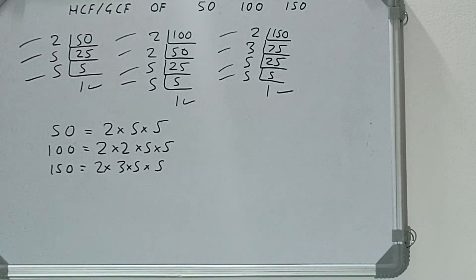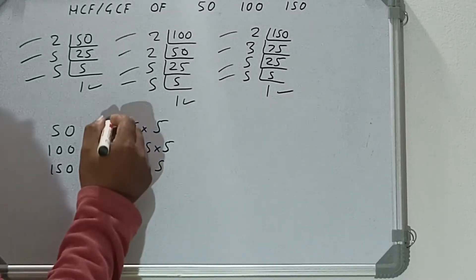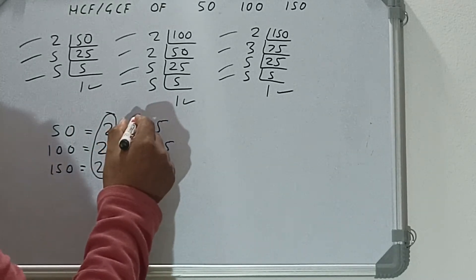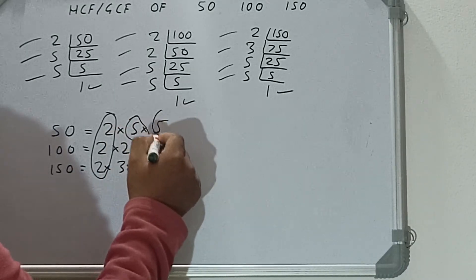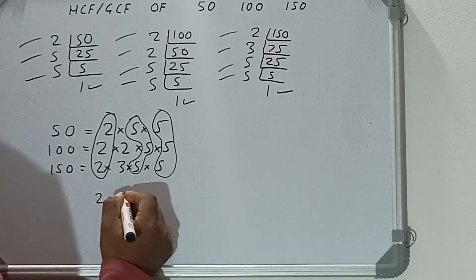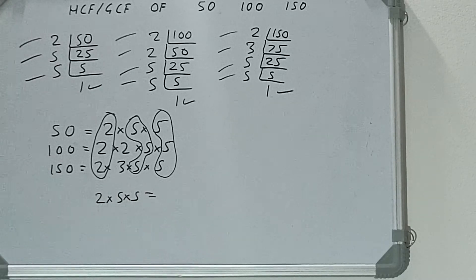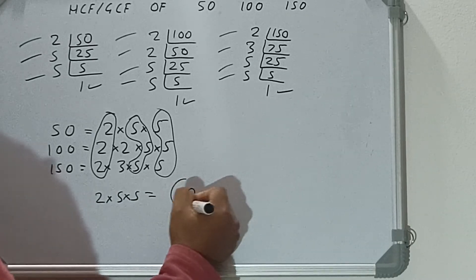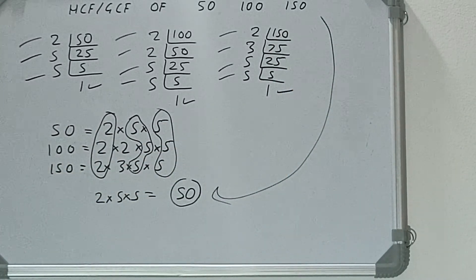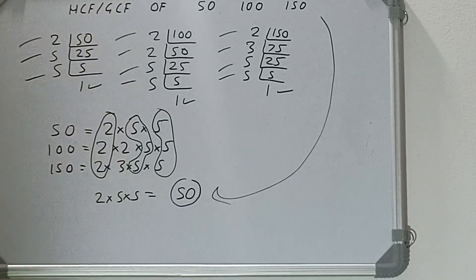Now in the next step we circle out the common prime factors among all three — remember it must be common among all three. We have a 2 in common, a 5 in common, and another 5 in common. We don't have anything extra in common. So we have a 2 and a pair of 5s in common. Multiplying these gives us 2 × 5 × 5 = 50. So the HCF or GCF of 50, 100, and 150 is 50. If you found the video helpful, please hit the like button, consider subscribing, and thanks for watching.